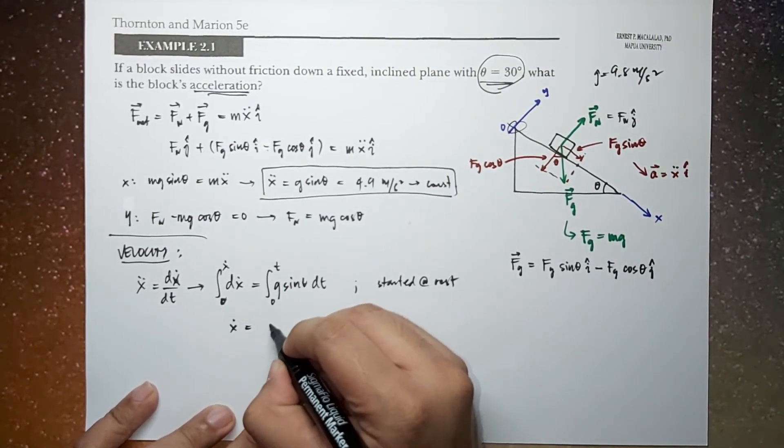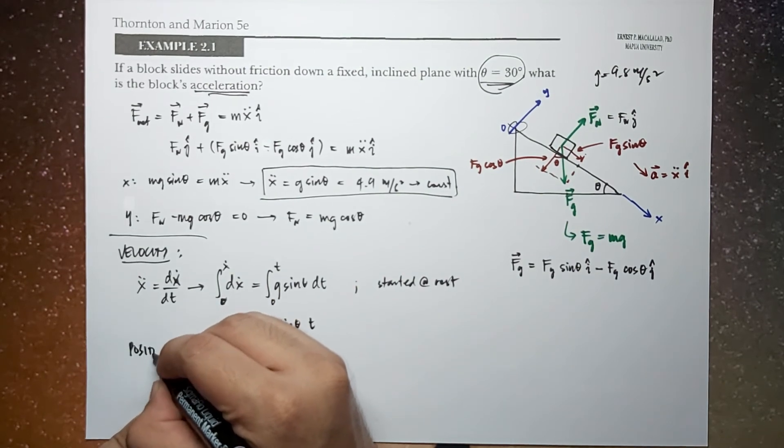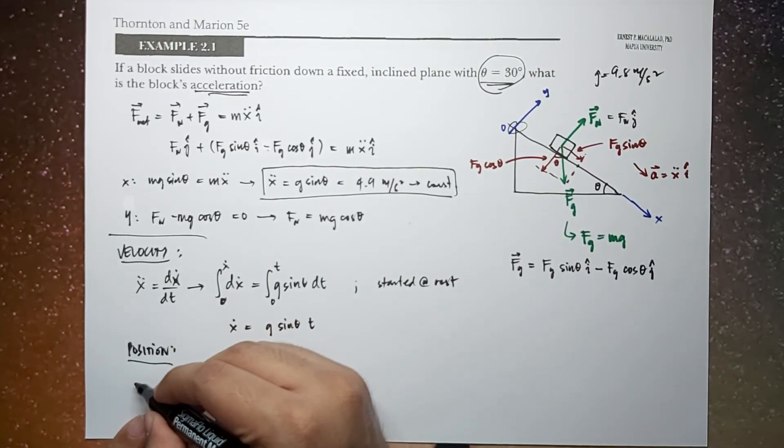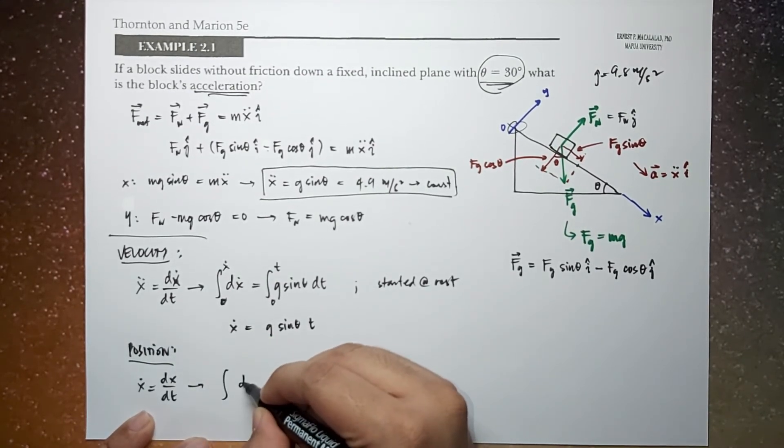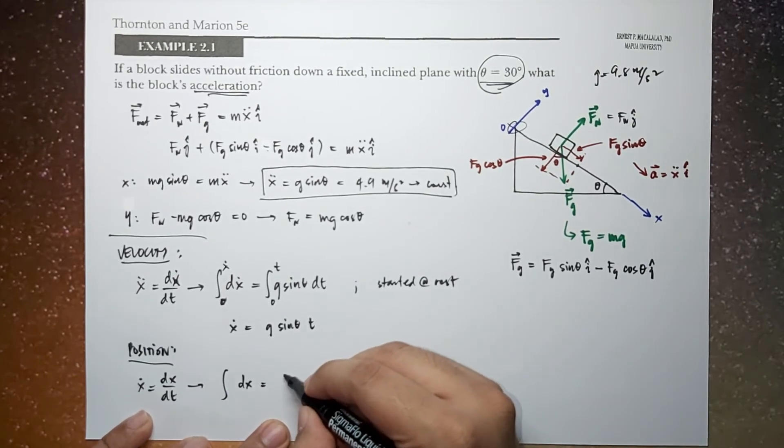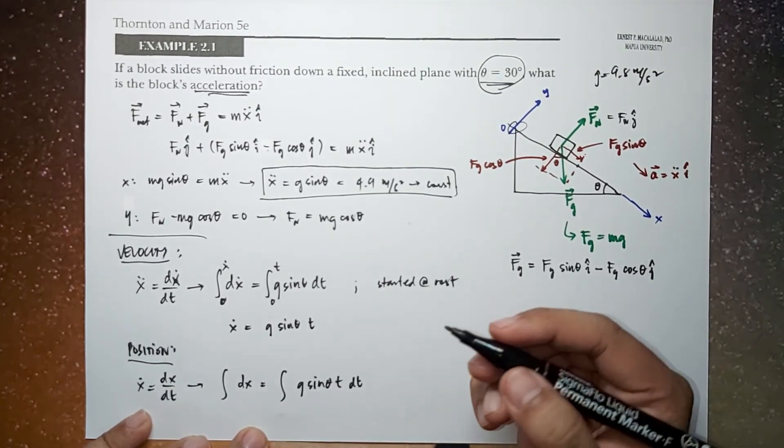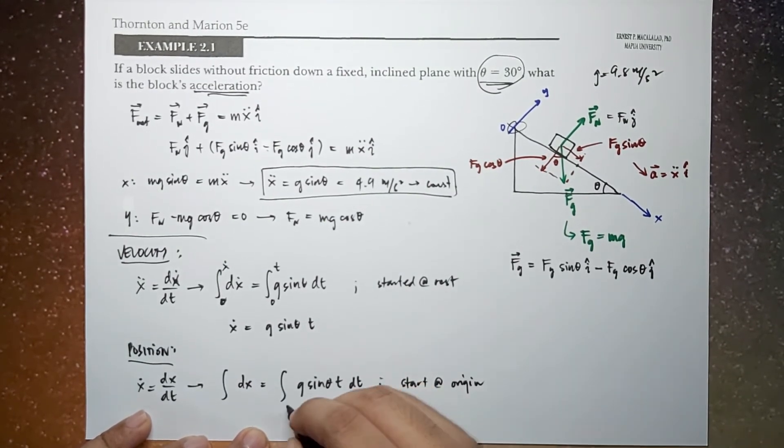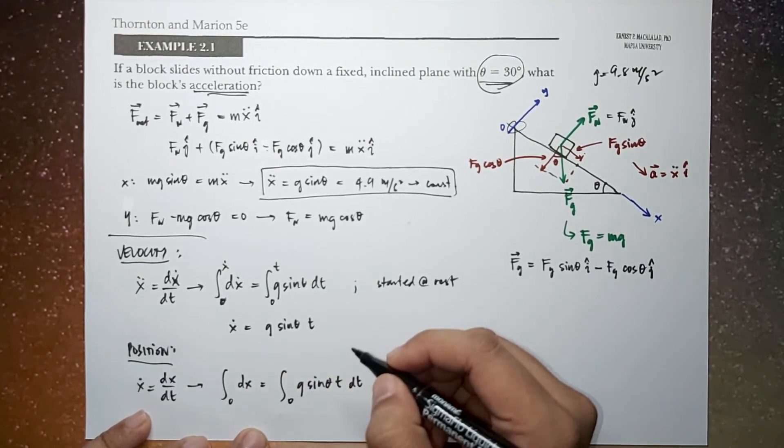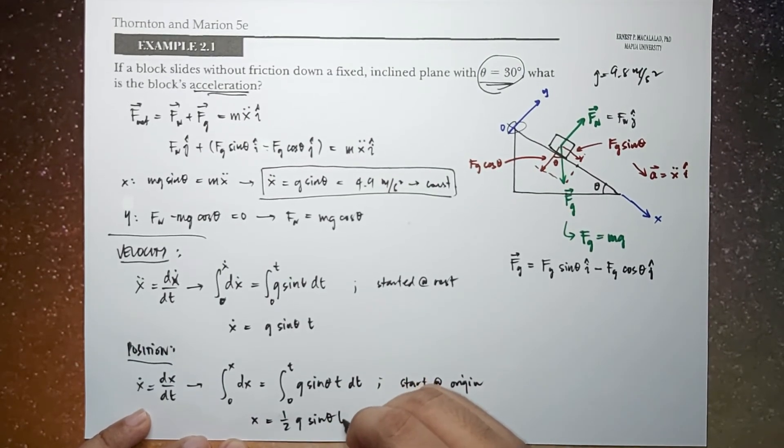Then for the position function, x dot would be the derivative of x with respect to time. So this is integral of dx equals integral of g sin theta t dt. So again, let's say it started at origin, so that means at time equal to 0, the position is 0, and at a later t, the position is at x. So this will give us this expression, one-half g sin theta t squared.